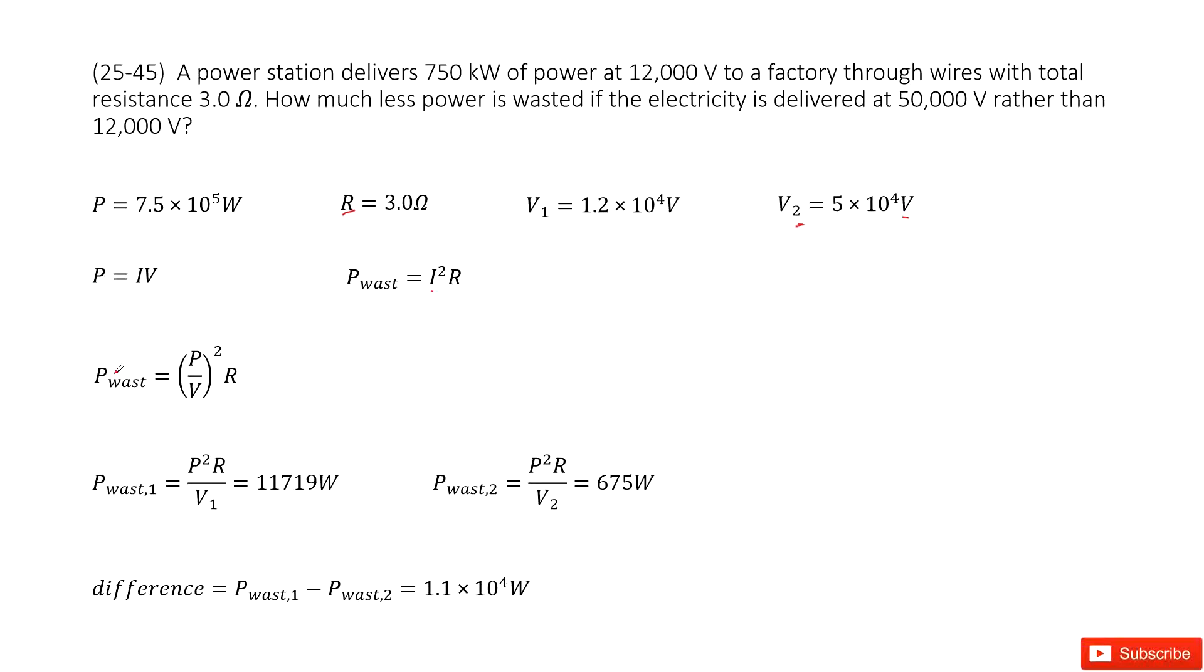So we can see the power wasted is I squared times R, and this I can be P over V.